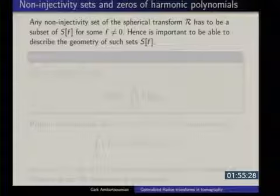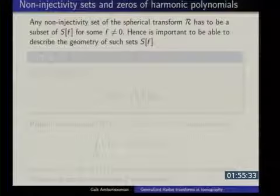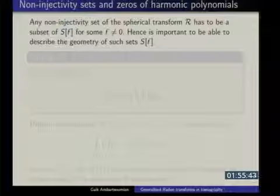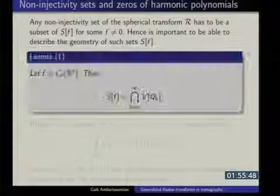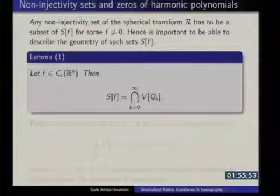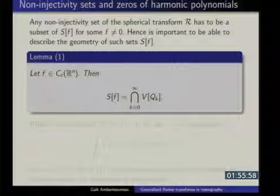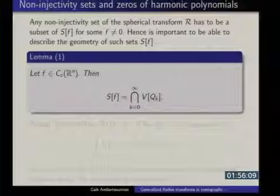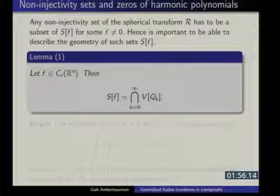For the next 20 to 30 minutes I am assuming I have all radii available. When I was talking about injectivity sets, I mentioned that you may also have limitations on your radius; for right now I am only talking about the locations of the centers. Lemma 1 says that if you have a compactly supported continuous function, then S(f) is an intersection of all V(Q_K). The V(Q_K) are the zeros of these polynomials, and Q_K depends on f.